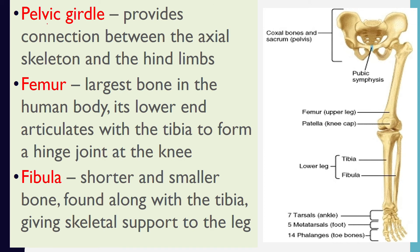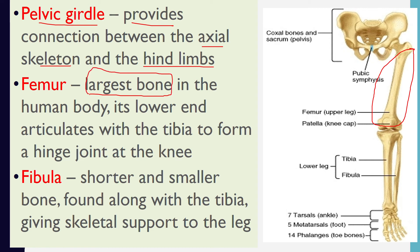The pelvic girdle provides connection between the axial skeleton and the lower limbs. We have the pubic symphysis and the femur — the largest bone in the human body. Its lower end articulates with the tibia to form a hinge joint at the knee. In the lower leg we have two bones: the tibia and the fibula. The tibia is larger than the fibula; the fibula is a shorter, smaller bone that provides skeletal support to the leg alongside the tibia.